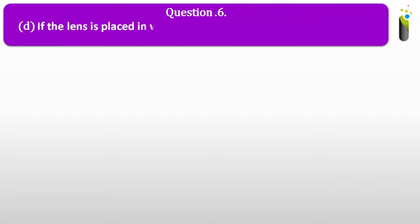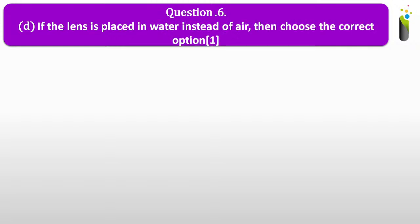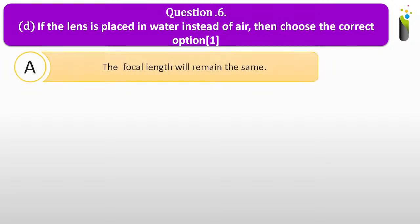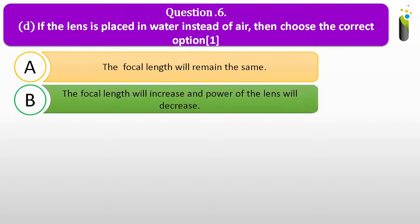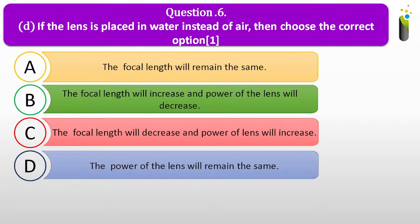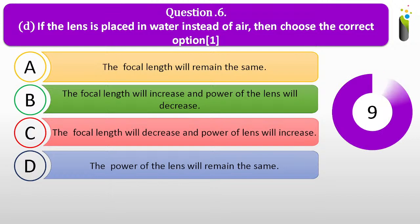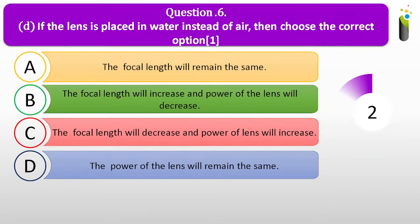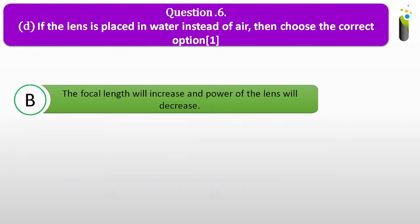Question number six D. If the lens is placed in water instead of air, then choose the correct option. A, the focal length will remain the same. B, the focal length will increase and the power of the lens will decrease. C, the focal length will decrease and the power of the lens will increase. D, the power of the lens will remain the same. The correct answer is B: the focal length will increase and the power of the lens will decrease.